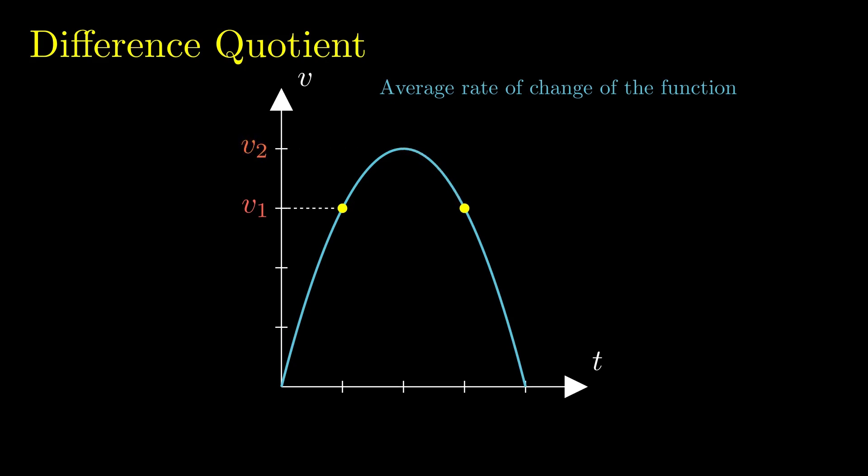So the slope of the secant line tells us that on average the body was moving with the same speed v1 and with zero acceleration. In other words, speeding up cancels the effect of slowing down, and on average the body was moving with the velocity v1.